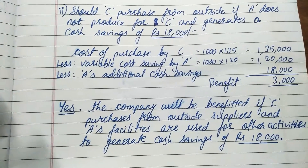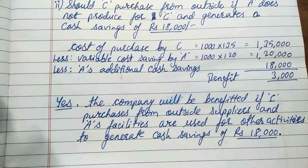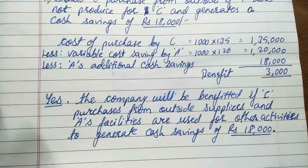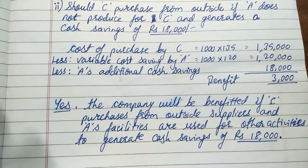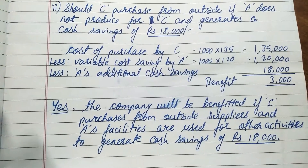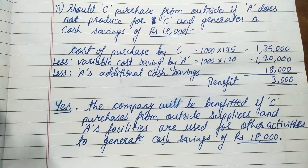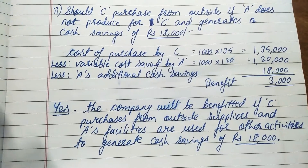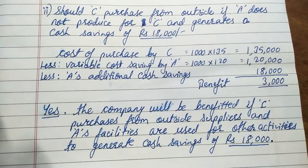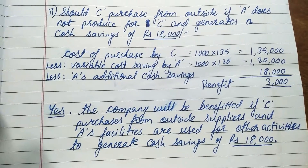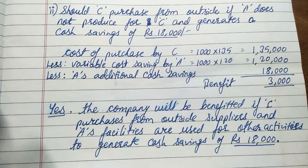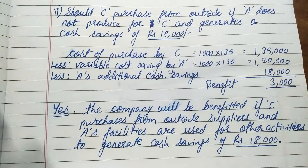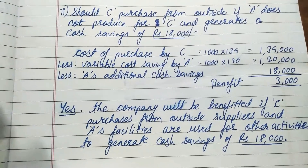The savings exceed the cost of purchase, giving a net benefit of 3,000 rupees to the whole company. The conclusion is: yes, the company will be benefited if C purchases from outside and A's facilities are used for other activities generating additional cash savings of 18,000 rupees. Always remember — whenever solving such problems, you must give your own conclusion, as these are decision-making questions.